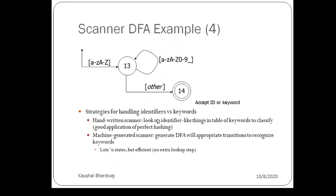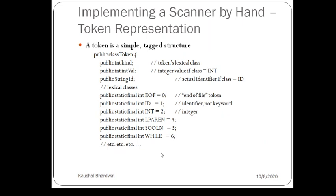The scanner strategy can be handwritten or machine-generated. In a handwritten scanner you look up identifiers in a table of keywords to classify them, and can use hashing techniques. A machine-generated scanner automatically creates an appropriate DFA to recognize your keywords. It will usually have more states than a handwritten scanner, since when writing manually you try to minimize the number of states, whereas a machine-generated scanner keeps many states.